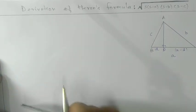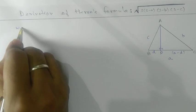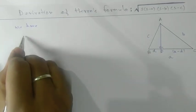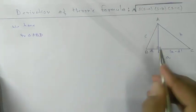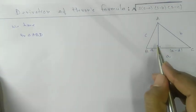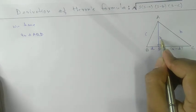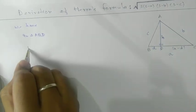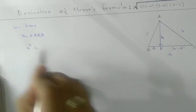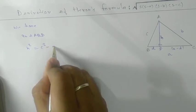We have side lengths A, B, C. In triangle ABD, which is a right-angle triangle, by Pythagoras theorem we can write: H² equals the hypotenuse squared minus the base squared. Taking AD as height H, we get H² = C² − D². This is equation one.